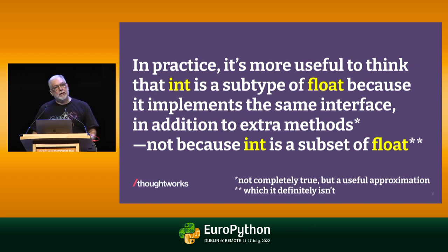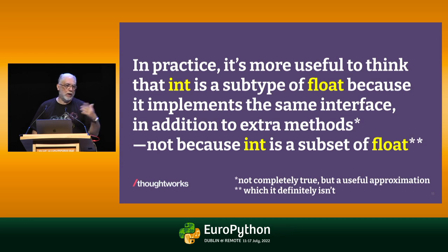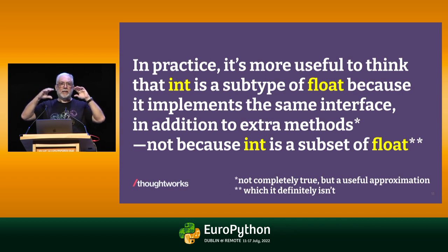In practice, it's more useful to think that int is a subtype of float because it implements the same interface. Basically, the interface of float has to do with arithmetic, and all the operations also apply to integers. Ints also have a few other methods, like those that do bitwise manipulation — shift-right, shift-left — things that wouldn't make sense in a float. That's the main reason why we can think of int as a subtype of float: it implements the entire interface of float plus additional methods.